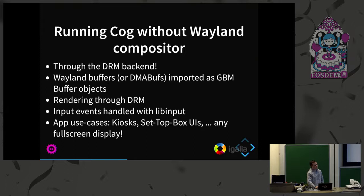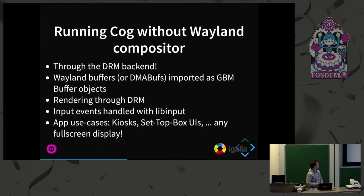As a basic requirement you need a Wayland compositor to run Cog, but recently we wrote a new backend that leverages the DRM architecture so we don't require a running Wayland compositor. That reduces dependencies for the application, and if you need a full-screen application — kiosks, set-top box UIs, any full-screen display — you can use that backend. The rendering is done with DRM.